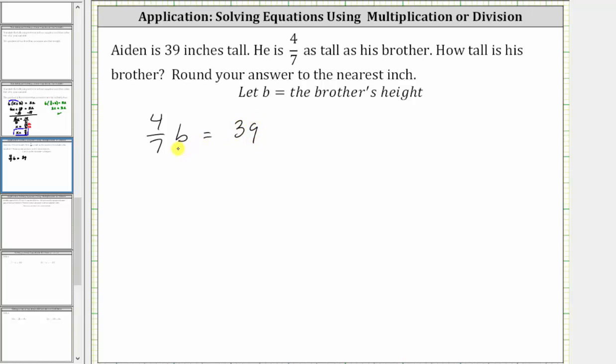And now we need to solve the equation for b to determine the brother's height. And since 4/7ths b means 4/7ths times b, we're probably thinking we should divide both sides of the equation by 4/7ths, which is true. However, dividing by a fraction is equivalent to multiplying by the reciprocal, and therefore instead of dividing both sides by 4/7ths, we will multiply both sides of the equation by 7/4ths.